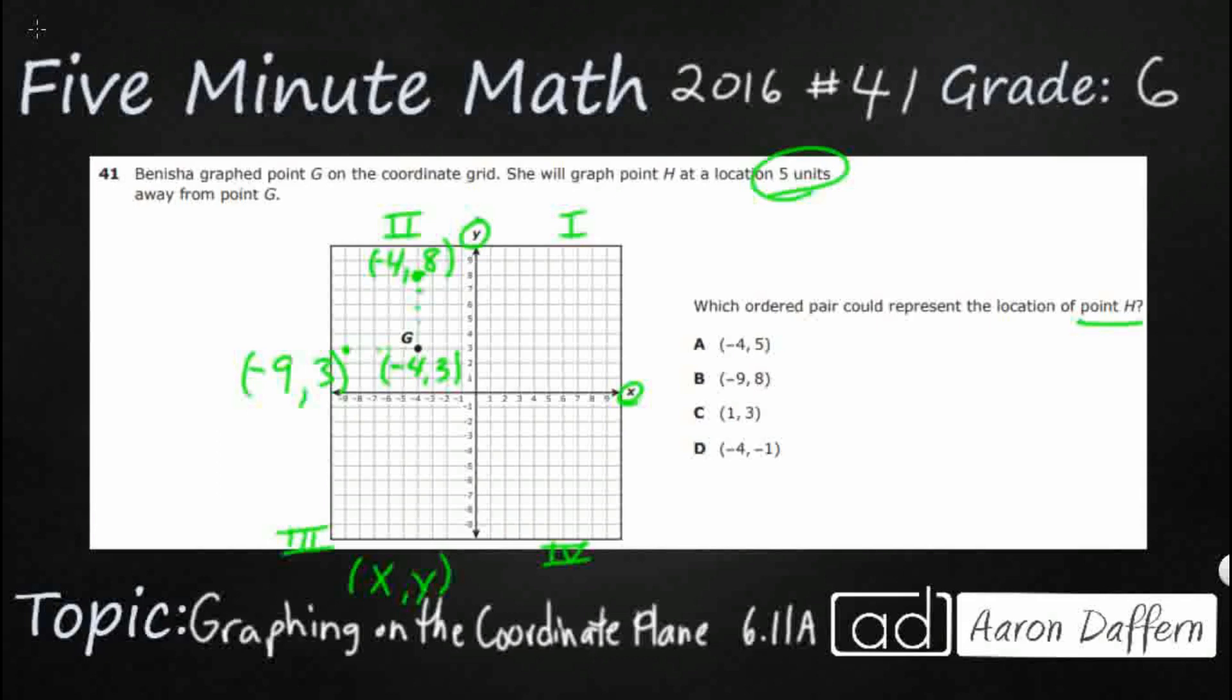We're not going to do diagonal. These are simply going to be up or down, left or right. So let's see what happens when we go down 5: 1, 2, 3, 4, 5.